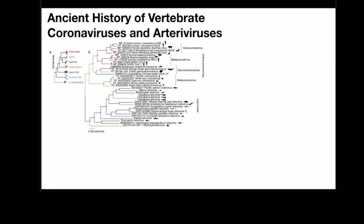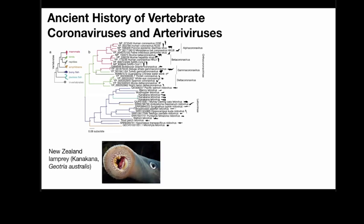I want to focus on two families within the Nidovirales: the coronaviruses and the arteriviruses. For the coronaviruses, I've taken the tree and color-coded the backbone by vertebrate class. Alpha and betacoronaviruses — the ones we're familiar with — are in pink because they're mammalian. Then there are a few from birds and reptiles. There's also a whole new set from fish and sharks. Most interesting of all are these from the New Zealand lamprey, which is a jawless vertebrate. The lamprey sequences don't quite match the host phylogeny exactly, but to me this suggests that the Coronaviridae family is as old as vertebrates — perhaps 500 million years old.